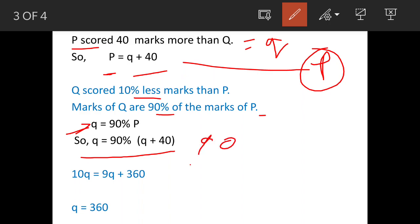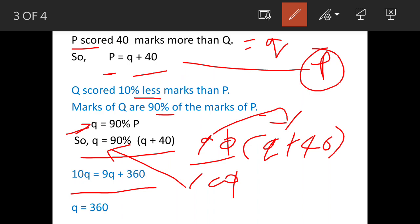Now solve this. 90 percent will be 90 upon 100 times Q plus 40. The zeros are cancelled, this 10 goes here and 9 will get multiplied with these two terms. We get 10Q is equal to 9Q plus 360.